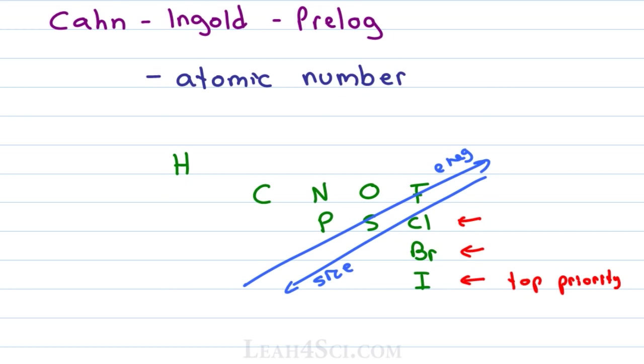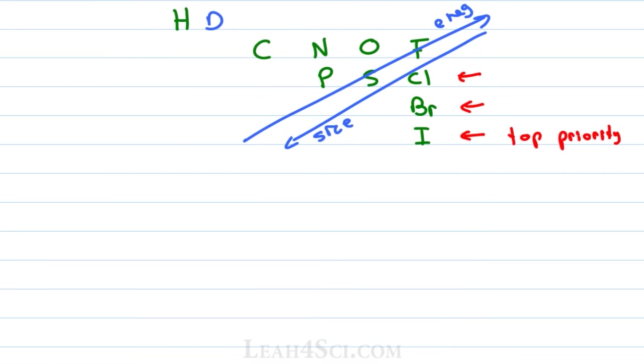The one other atom that'll sometimes come up to trick you is deuterium. Deuterium? Where is that on the periodic table? That's a little bit of a trick that professors like to use to see if you know how to differentiate and also to pinpoint the specific hydrogen in question.